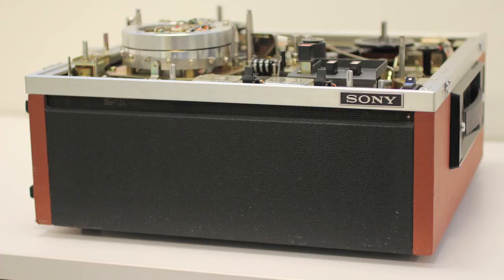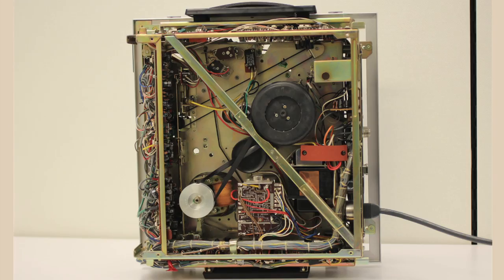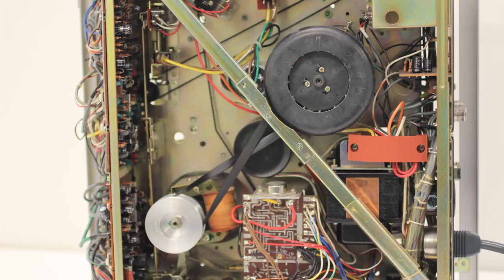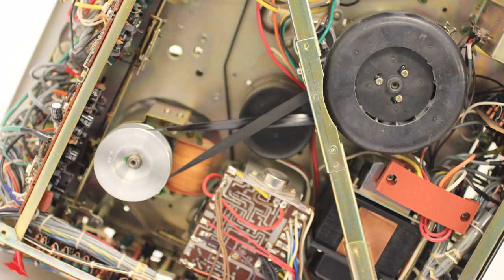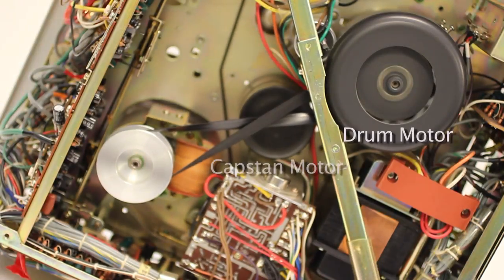In the Sony AV3650, the tape drive uses a dual-motor system. Mounted below the reel panel and the base of the machine are the drum motor and the capstan motor.